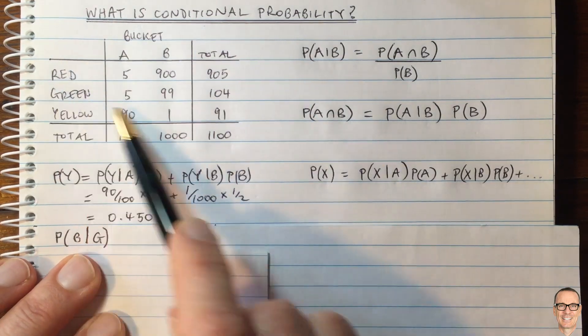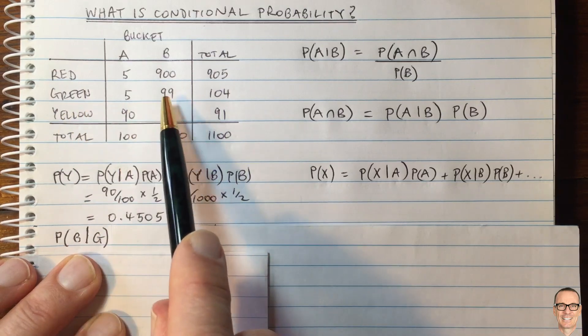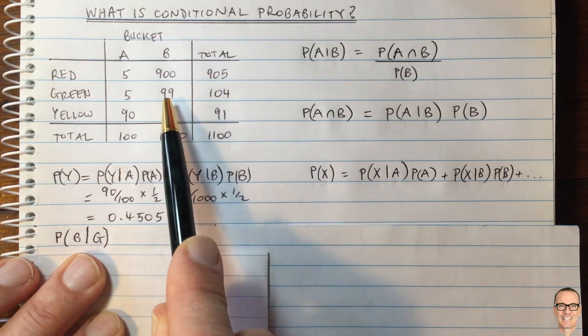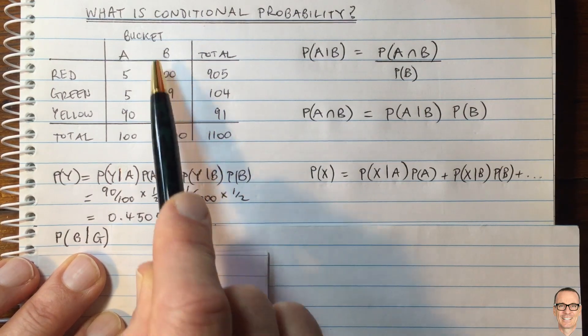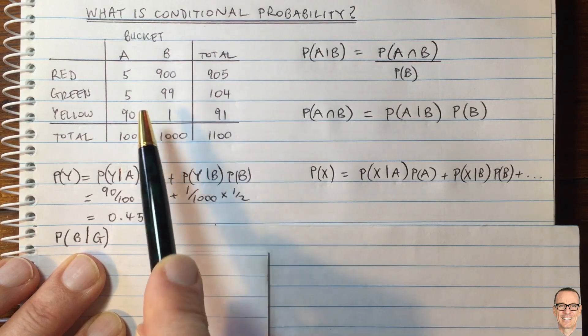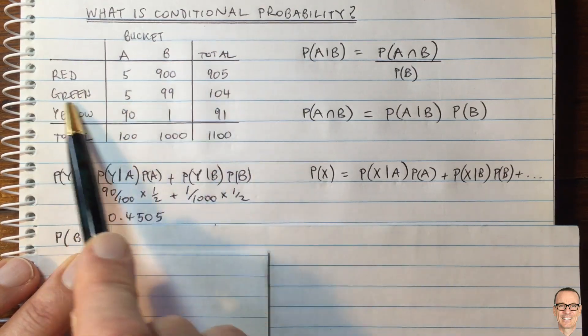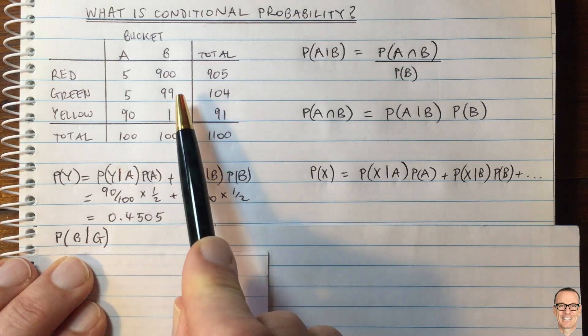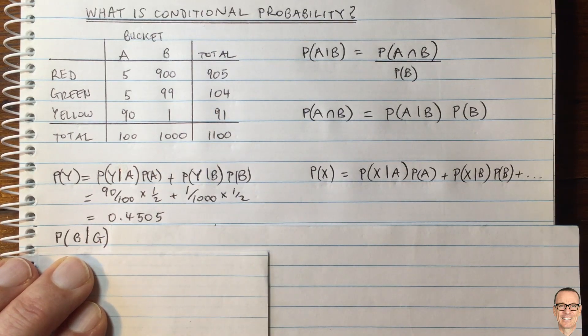If we look at this table up here, we might think that there's 99 in bucket B. We look along the green line because we're told it's green. We might think the chance of it being bucket B is 99 out of 104. And that looks to be something which intuitively you might think is the answer to this question. Again, if you did that, you'd be being tricked.